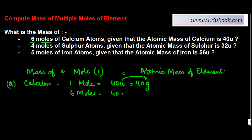So 40 grams into 6, or 240 grams. So the mass of six moles of calcium is nothing but a multiple of atomic mass of that element, which is calcium, times the number of moles which are there.